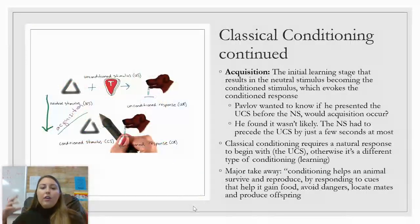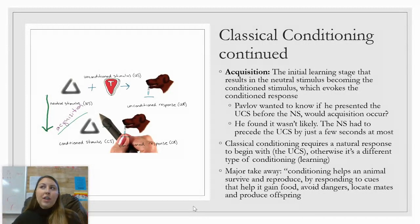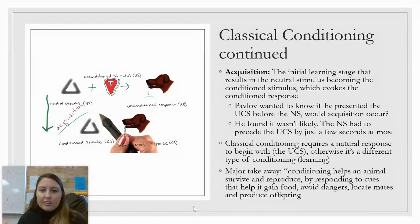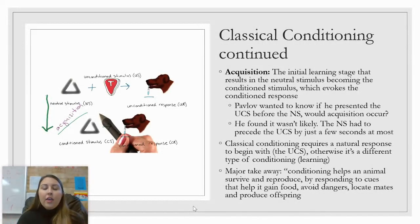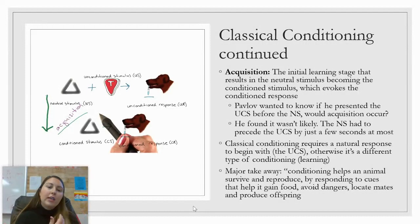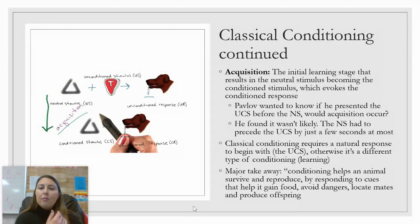There are a few different phenomena that can occur in relation to classical conditioning. The first is called acquisition — the initial learning stage that causes the neutral stimulus to become the conditioned stimulus. In my bird example, when seeing a bird first caused me to be afraid, that was the acquisition period.